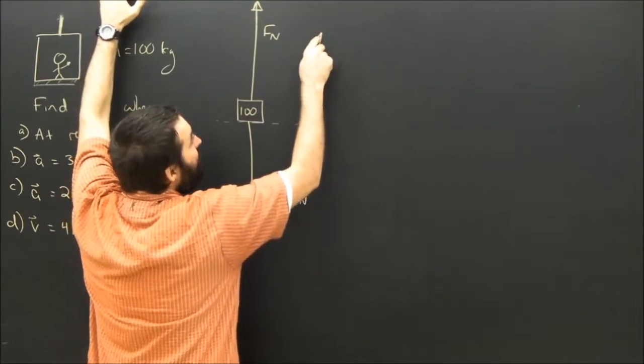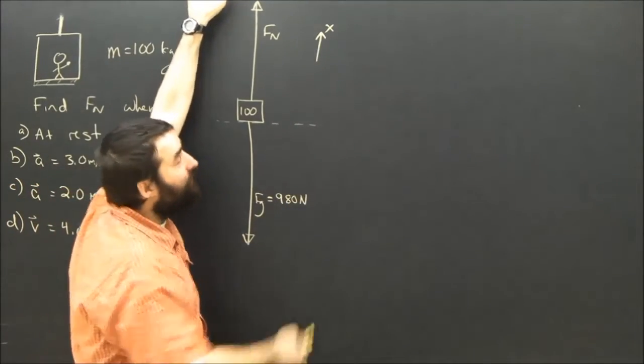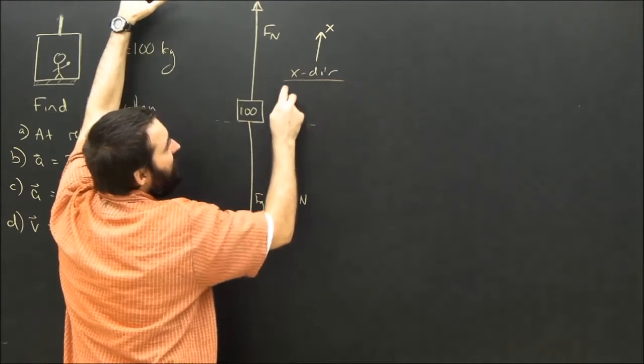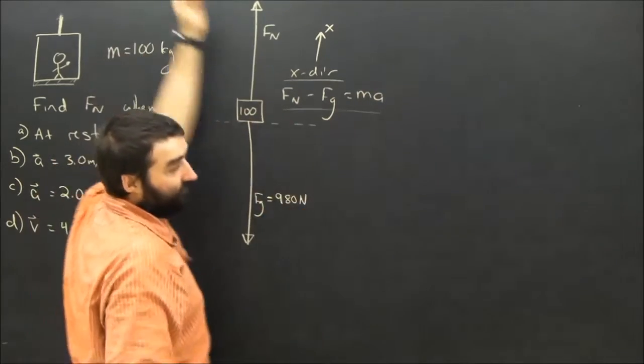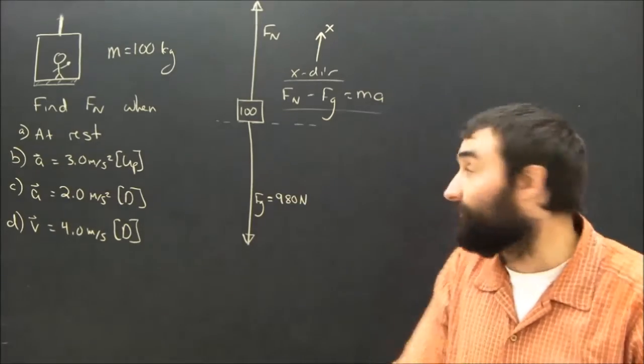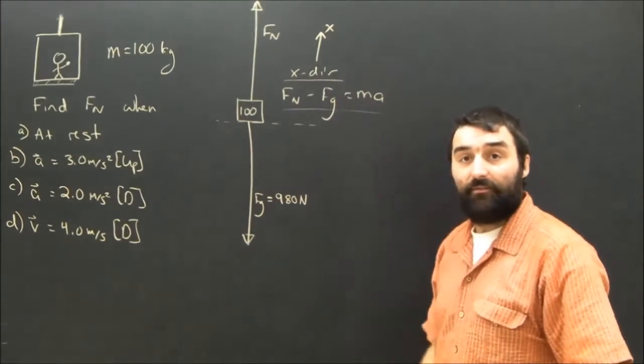I'm going to call the x direction up, because that's where it's accelerating, at least in some part of it. And the x direction equation, therefore, is going to say Fn minus Fg equals Ma. That's Newton's law, and that law is really good for anyone or anything in an elevator. It's really all we need. So for the different parts, we're just going to change some of the givens from this equation.